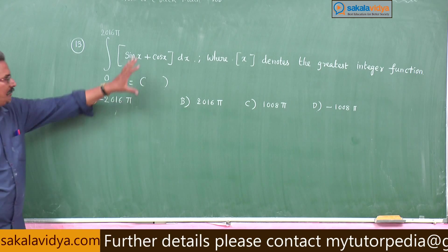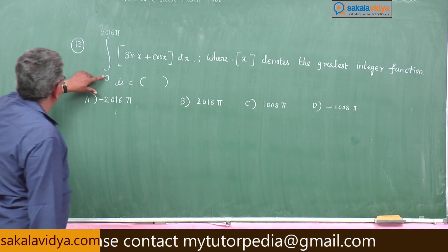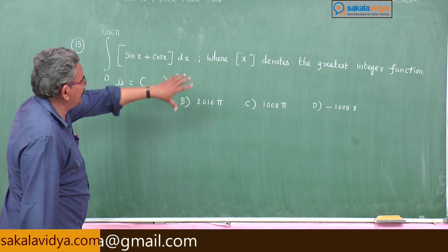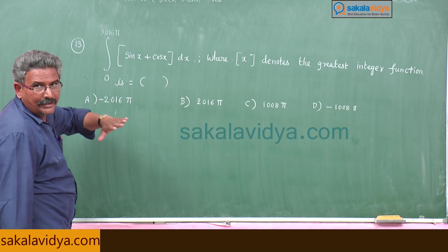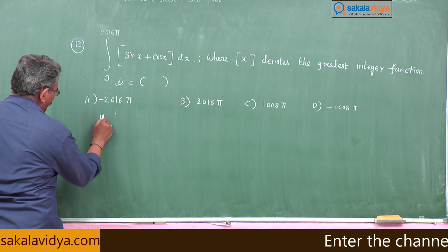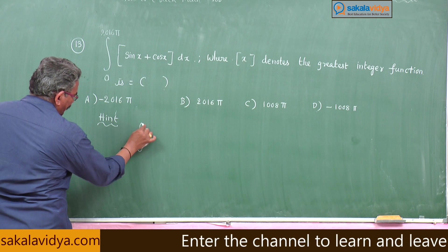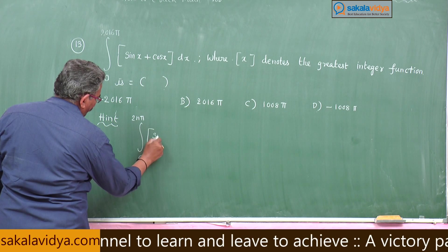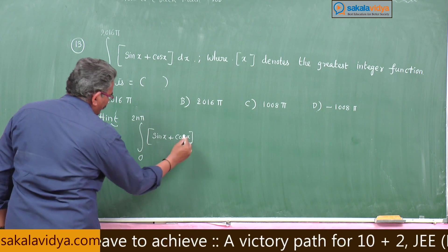In this problem also we have one shortcut. Integral 0 to 2nπ of integral part of sin x + cos x dx is equal to -nπ.